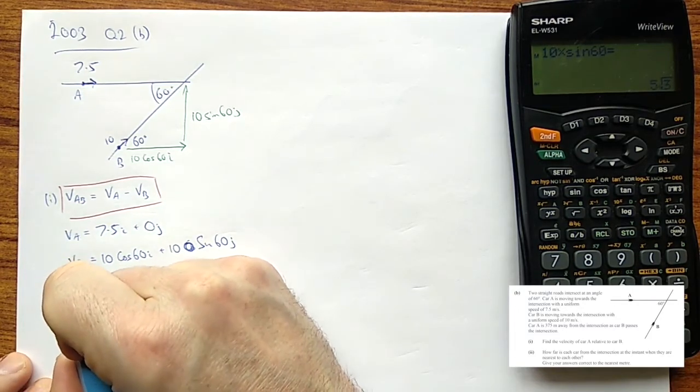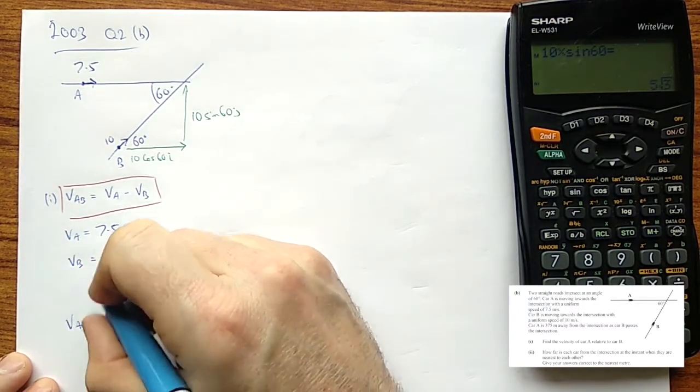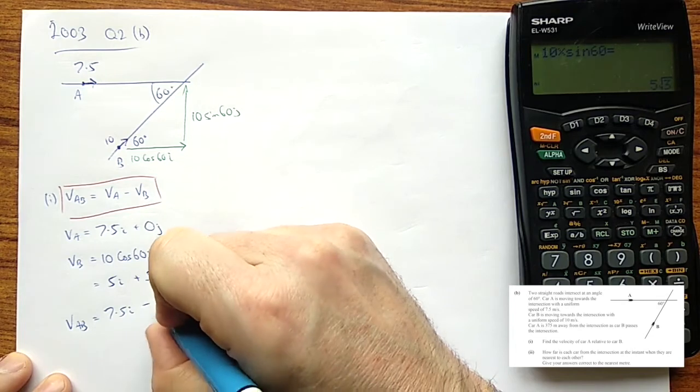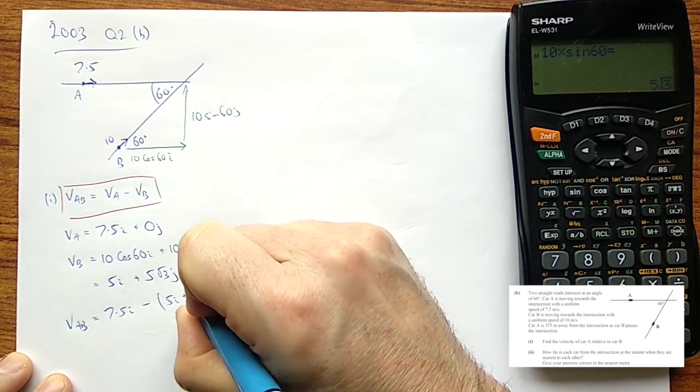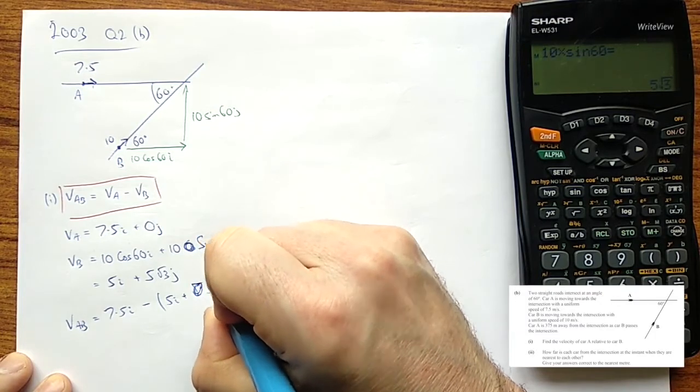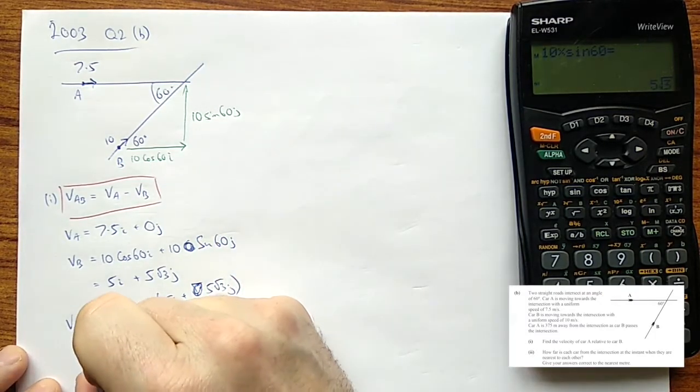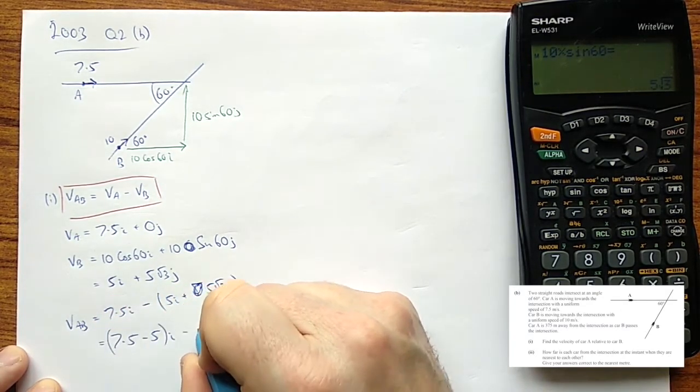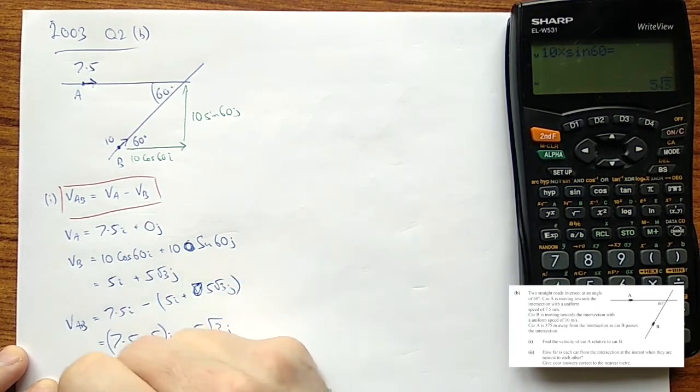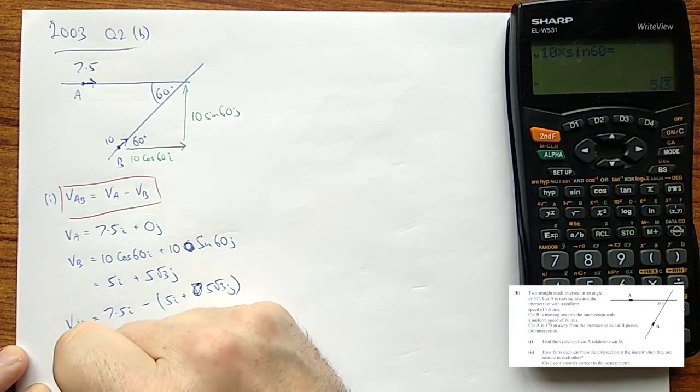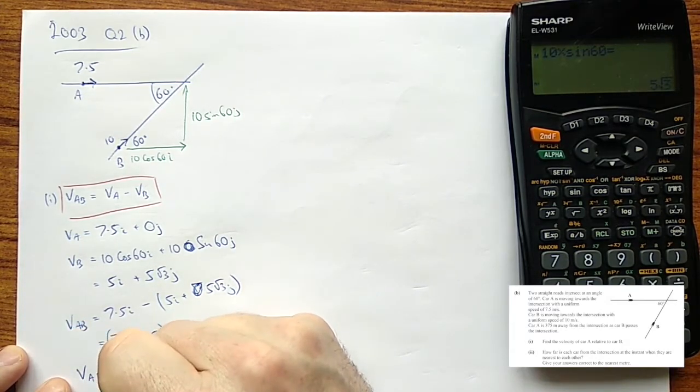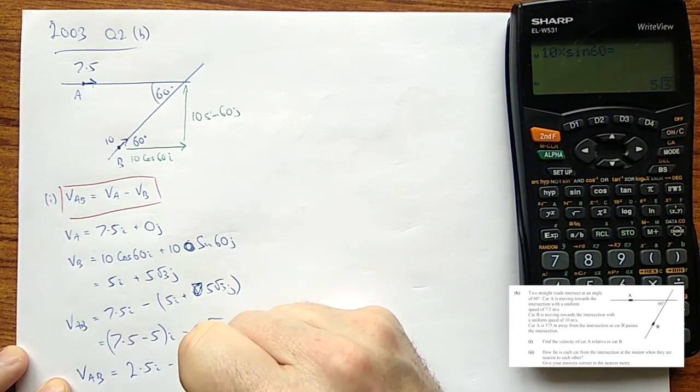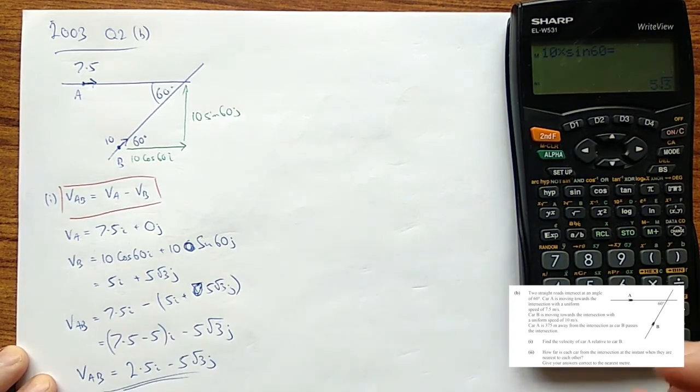So, VAB, velocity of A relative to B, is simply 7.5i minus VB. Which is 5i plus 5 root 3j. 7.5 minus 5i. Put all the i's together. Minus 5 root 3j. So, VAB equals 2.5i minus 5 root 3j. And there we have part 1.